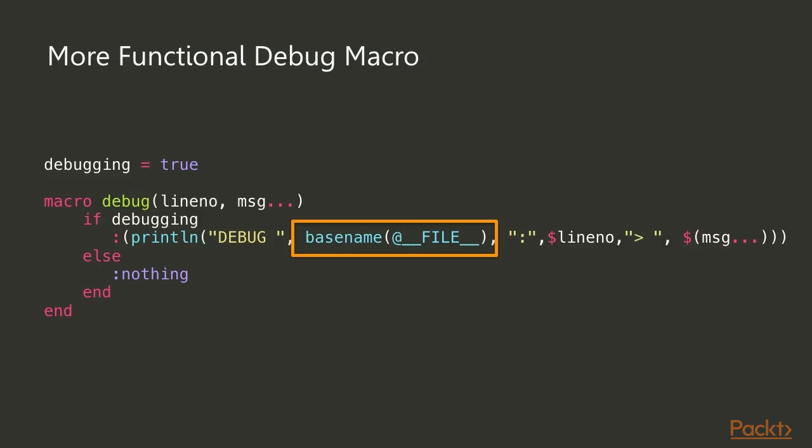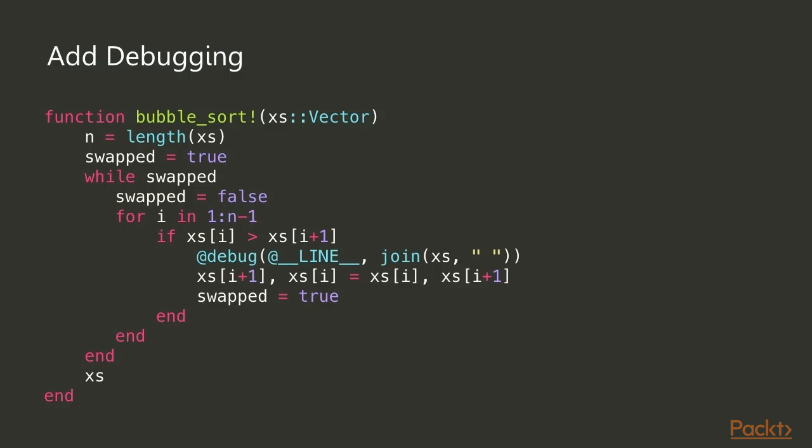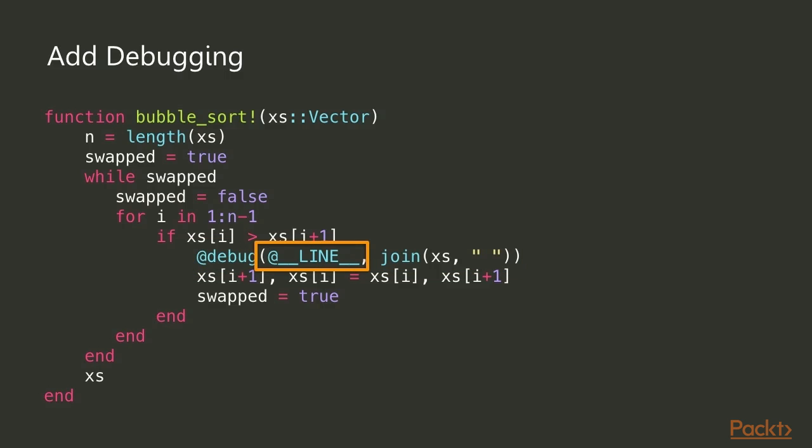We use `basename` to strip out the rest of the path and only get the file name. One unfortunate thing about how Julia works at the moment is that we can't use the same approach for the line number — if you used `__line__` it gives you the line number where the macro is defined, not where it's called. So we added a line inside the bubble sort that shows what's happening each time we do a swap, passing `__line__` explicitly. Hopefully in future versions of Julia we won't have to do that manually.